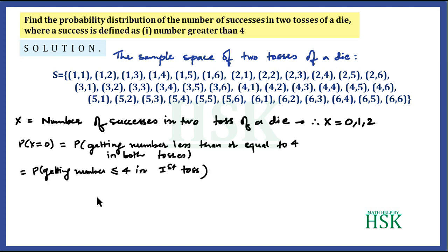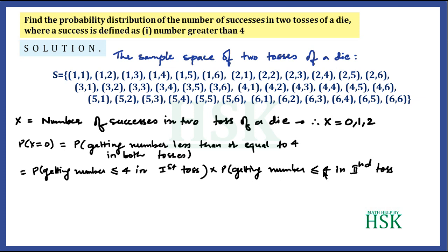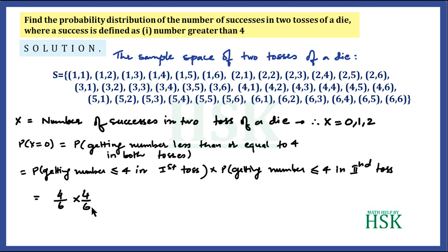P(X=0) is the probability of getting a number less than or equal to four in both tosses. This equals the probability of getting a number less than or equal to four in the first toss, multiplied by the same probability for the second toss. There are four such numbers — 1, 2, 3, and 4 — out of 6 total outcomes, so this equals 4/6 × 4/6, which simplifies to 4/9.